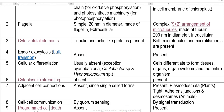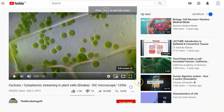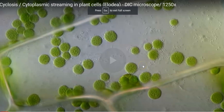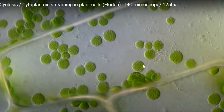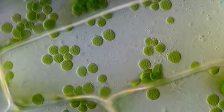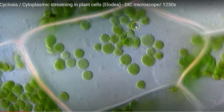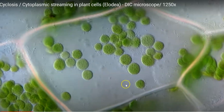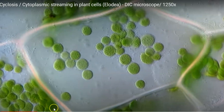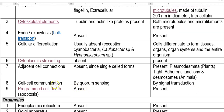The next one is cytoplasmic streaming — the movement of cytoplasm inside the cell. Looking at a plant cell, cytoplasmic streaming is shown: you can see the movement of chloroplasts inside the cell. This cytoplasmic streaming is commonly absent in prokaryotes but is present in eukaryotes.